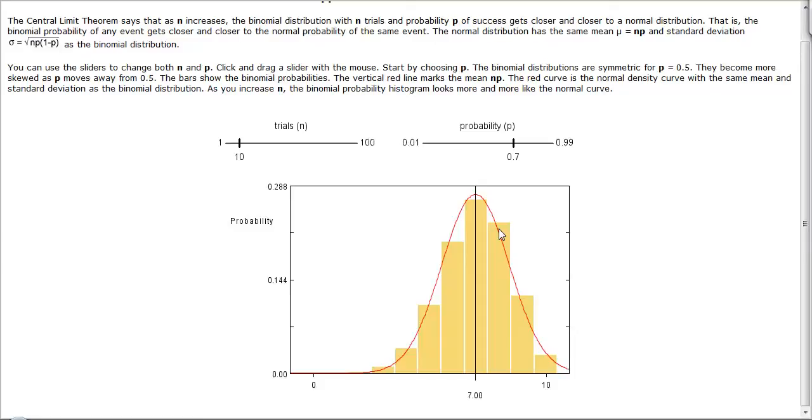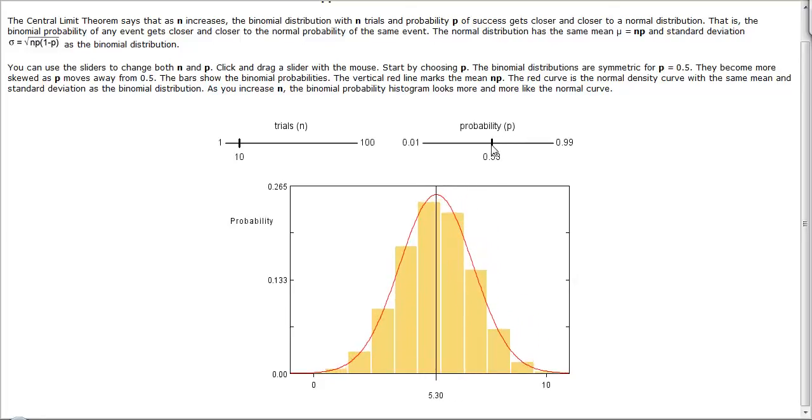So this is what we're going to demonstrate here. I will set this slider up to be at 0.5, a 50% chance of success, and I'll begin with the number of trials to be 10.